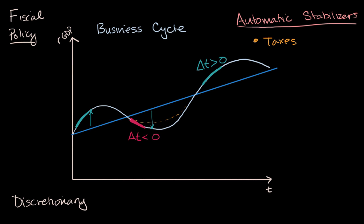Now, another example of an automatic stabilizer would be things like welfare payments or unemployment insurance. Why would these be automatic stabilizers? Well, when times are good, when you have this positive output gap, fewer and fewer people are going to need welfare or they're going to need unemployment payments.